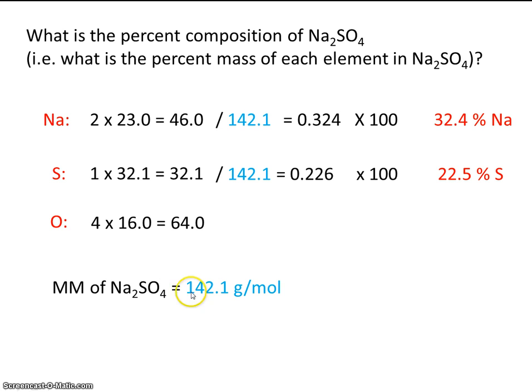And if we have 142.1 grams of sodium sulfate, 64 of that is oxygen. So 64 divided by 142.1 times 100. So if we have a sample of sodium sulfate, 32.4% is sodium, 22.5% is sulfur, and 45.0% is oxygen.